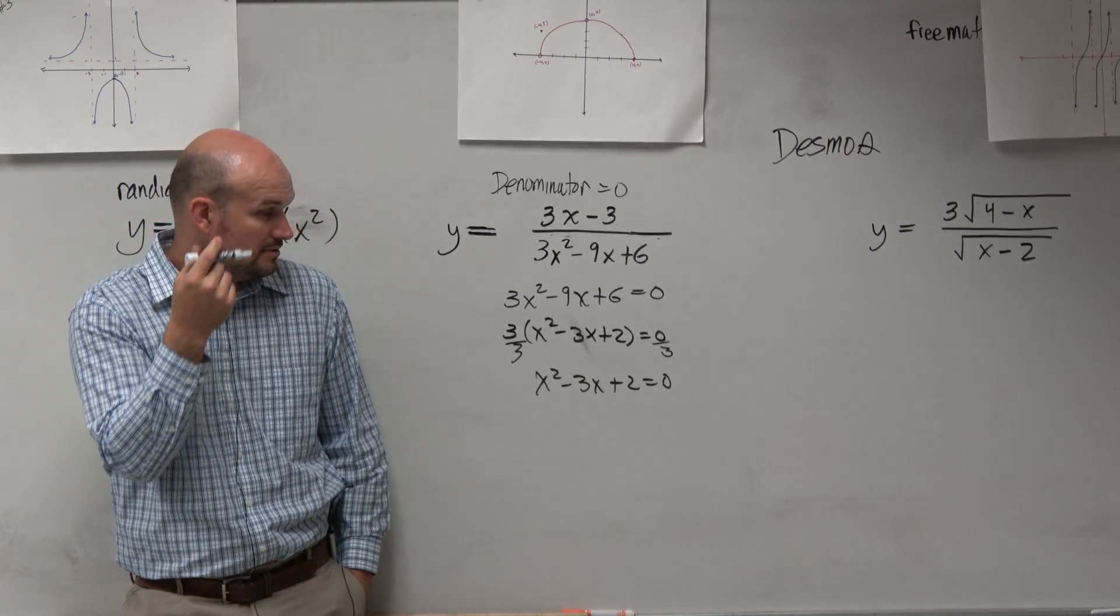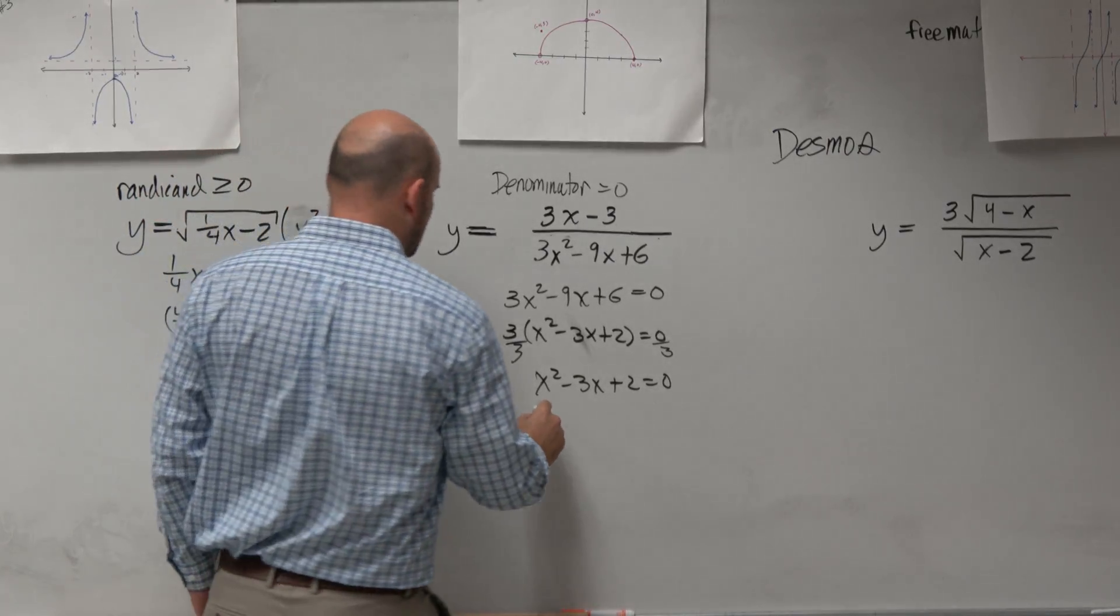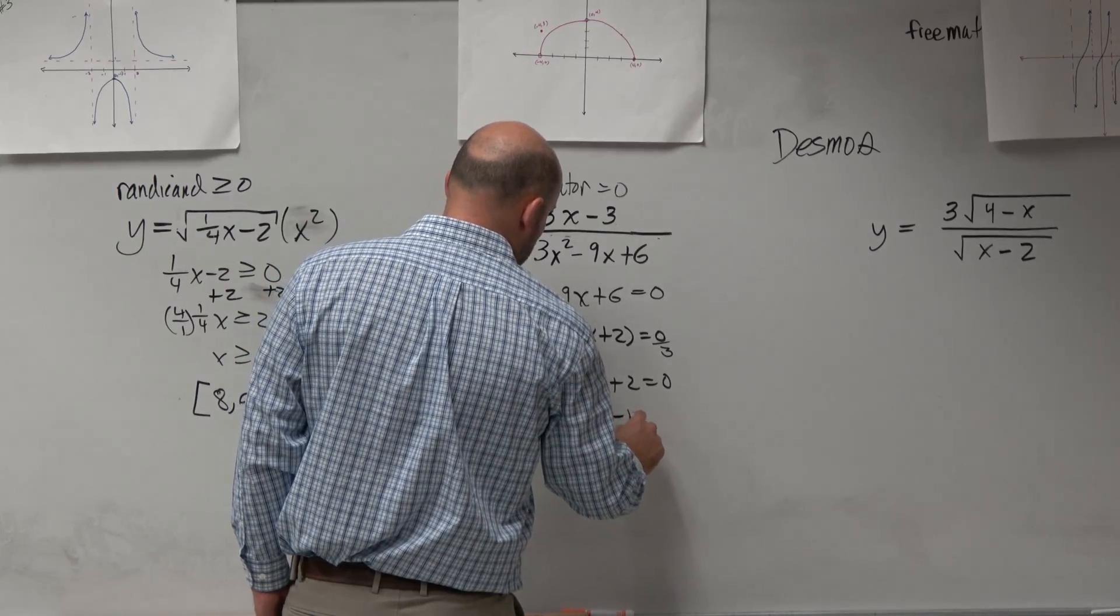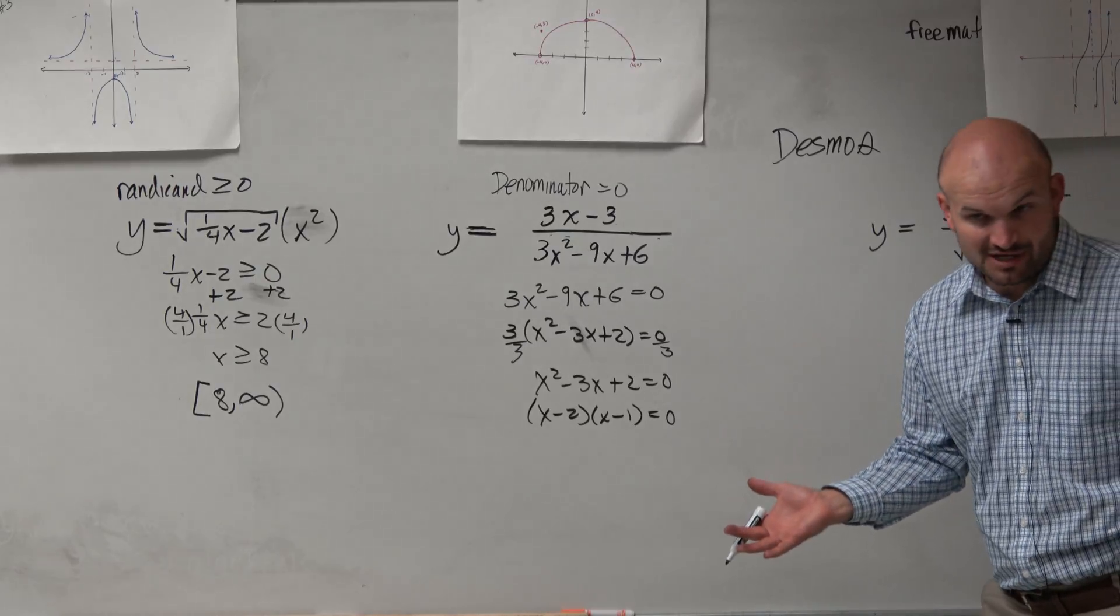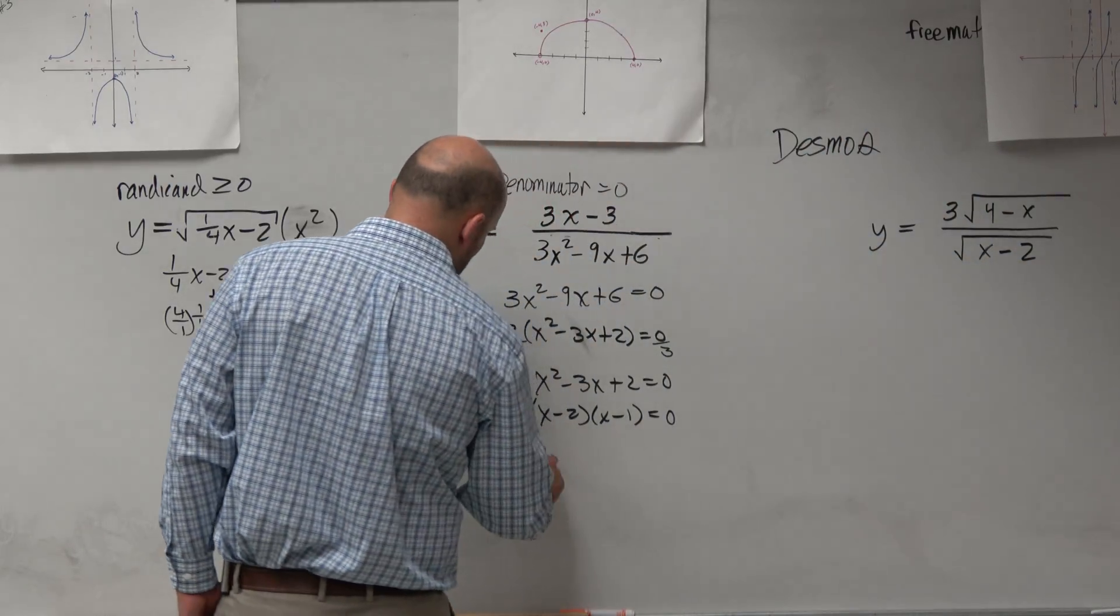And yes, Elliot? It's 2 and 2. Yeah. So I can factor this into x minus 2 times x minus 1 equals 0. So now, if you're remembering quadratics from algebra 2, you can apply the 0 product property.